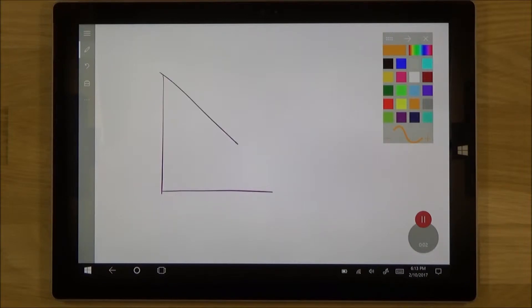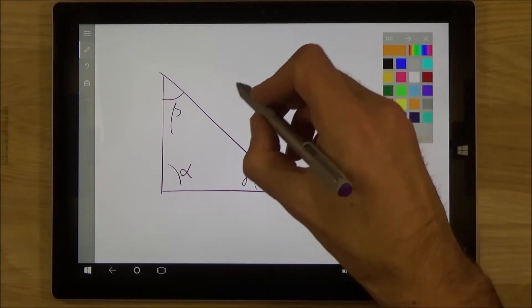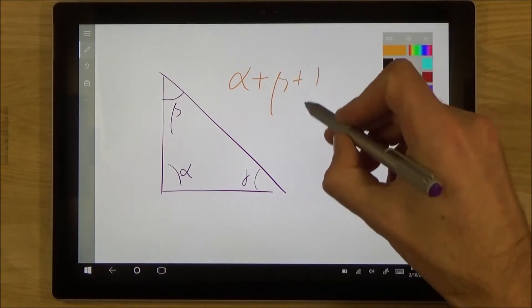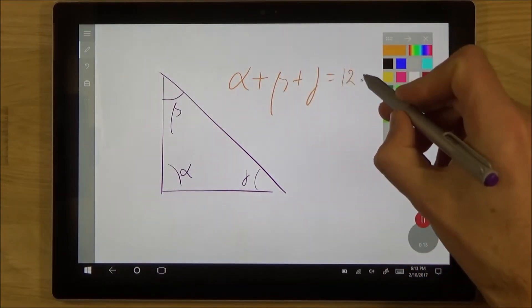Here we have a triangle with the angle alpha, beta, gamma. Alpha plus beta plus gamma is 120 degrees.